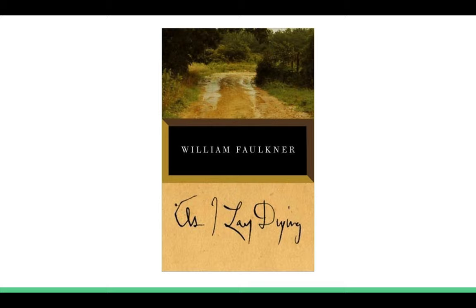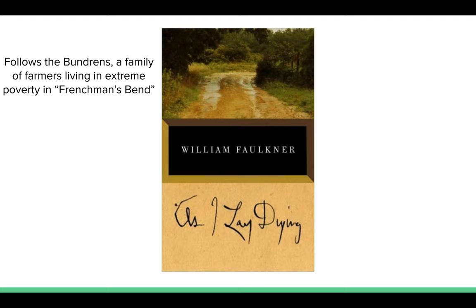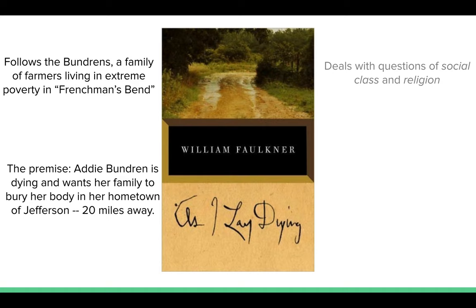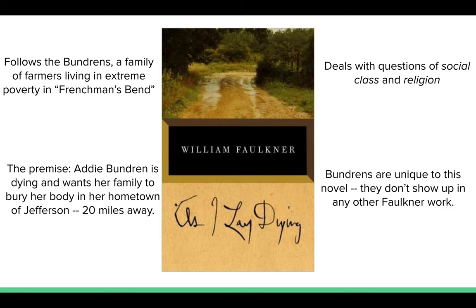As I Lay Dying was written in only six weeks and was published in 1930. It is a Yoknapatawpha novel that follows the Bundrens — a family of farmers that live in extreme poverty in a part of Yoknapatawpha called Frenchman's Bend, a rural community some 20 miles away from the county's main city, Jefferson. Based on his own statements, Faulkner seems to believe that As I Lay Dying was his best work — he calls it a tour de force and a masterpiece.